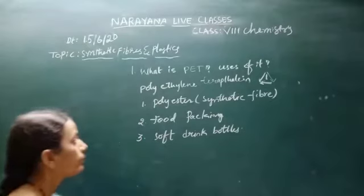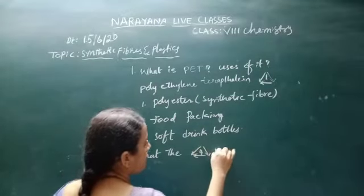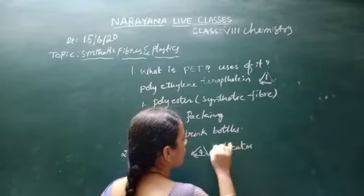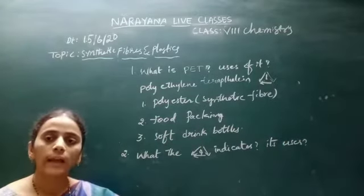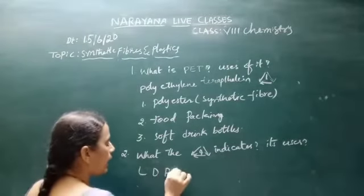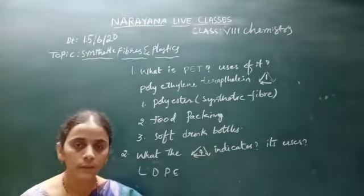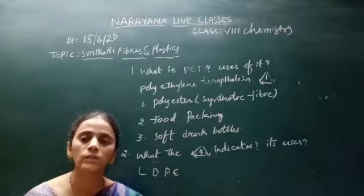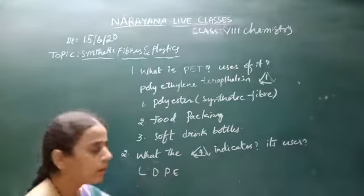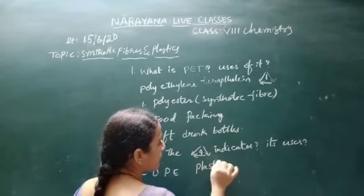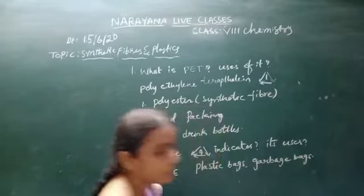Code 4 is given to LDP type of plastic. LDP stands for low density polyethylene, and its code is 4. LDP or code 4 plastic is widely used in making plastic bags and garbage bags.